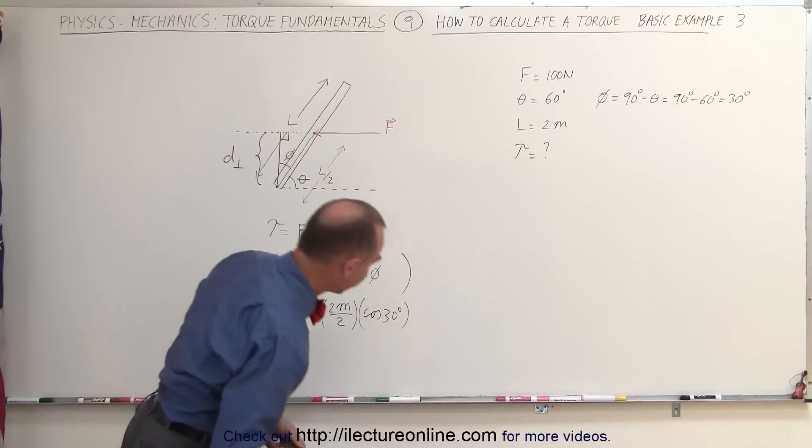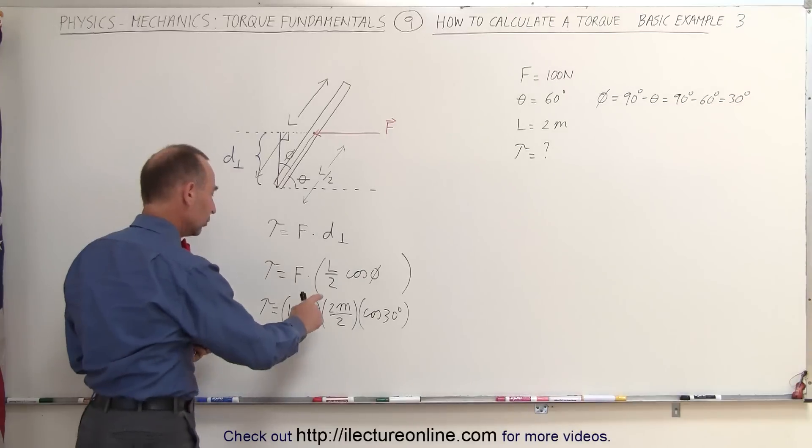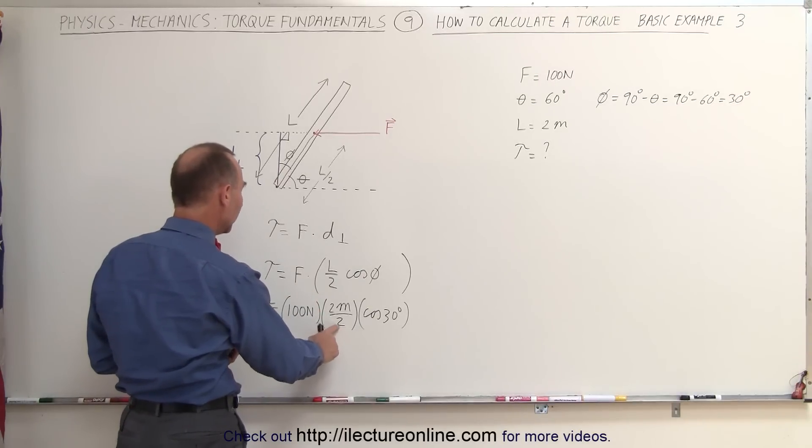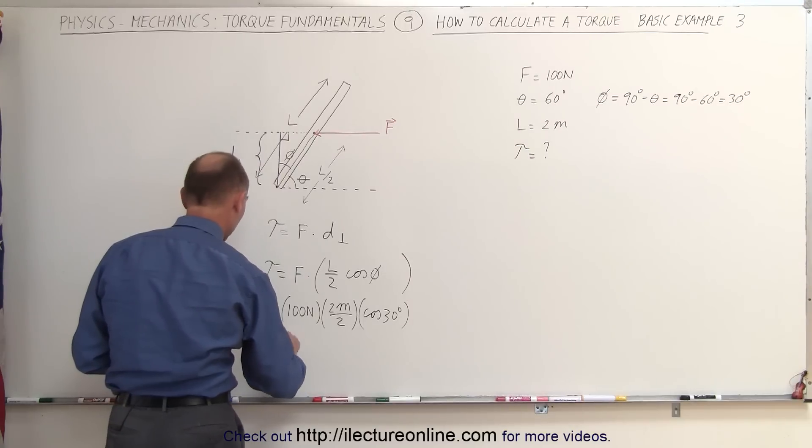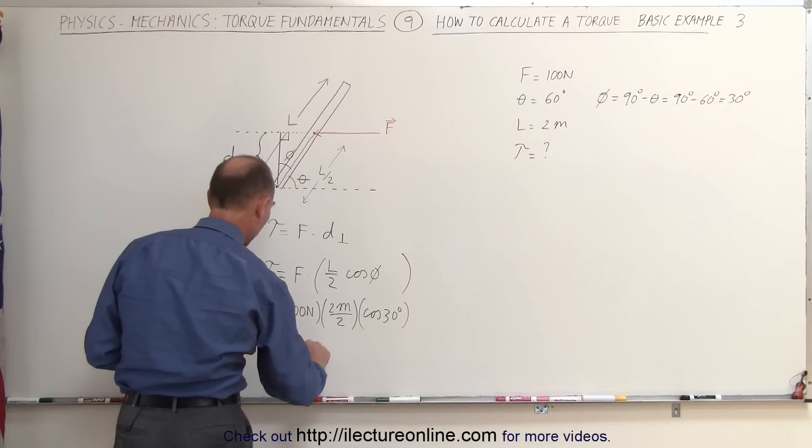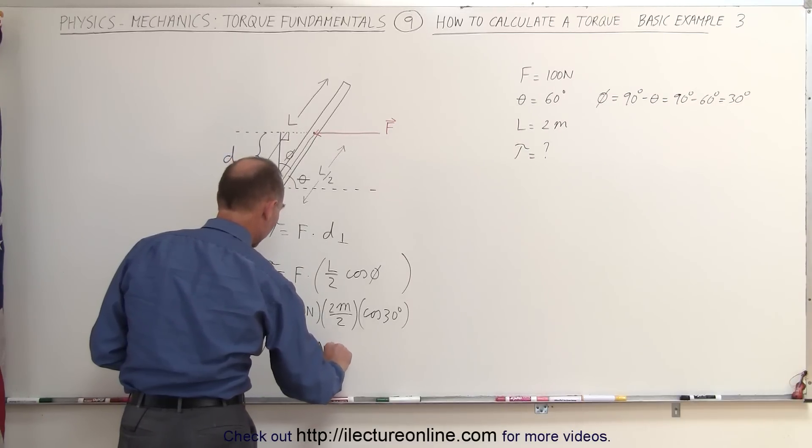When we plug that into a calculator, 2 divided by 2 would be 1. 100 times the cosine of 30, which is 0.866. That would mean that the torque is equal to 86.6 newton meters.